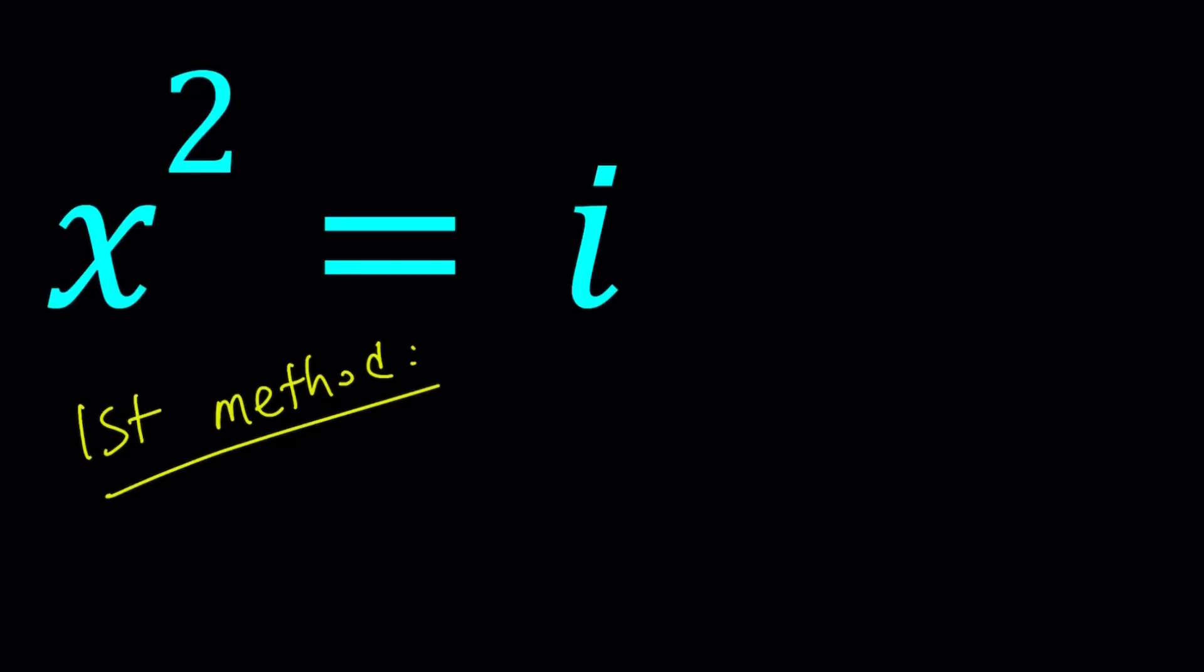For my first method, I'm going to do something that is pretty standard for when you're dealing with complex numbers. And that is calling x a complex number. Obviously, I could have used a z here, which wouldn't make a huge difference, but a lot of times z is the right variable for complex numbers. Anyways, so let's go ahead and write x as a plus bi.